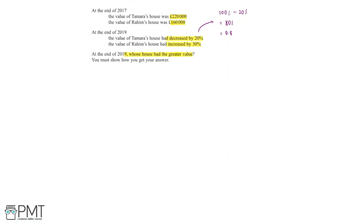To find 80%, we multiply by 0.8. So to find the value of Tamara's house, which had decreased by 20%, we'd multiply the original value by 0.8. Now let's consider what it means for the value to increase by 30%. We have the original value of 100%, and an increase of 30%, so we'd be finding 100% plus 30%. In terms of a multiplier, 100% can be written as 1, and 30% can be written as 0.3. So we'd be finding 1 plus 0.3, which equals 1.3. To find an increase of 30%, we'd multiply the original value by 1.3.